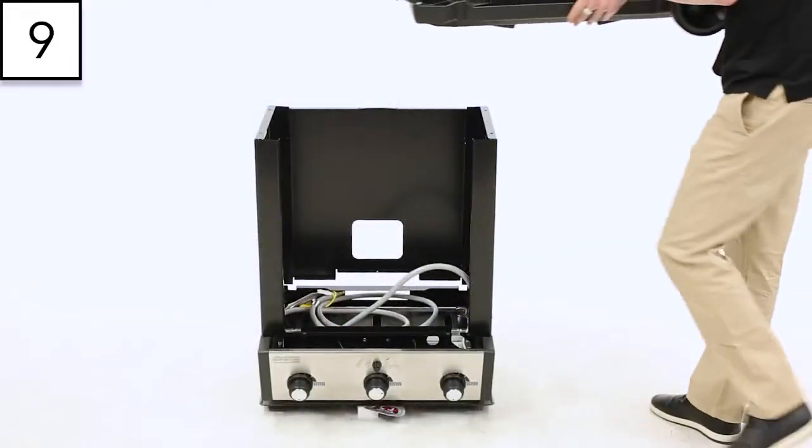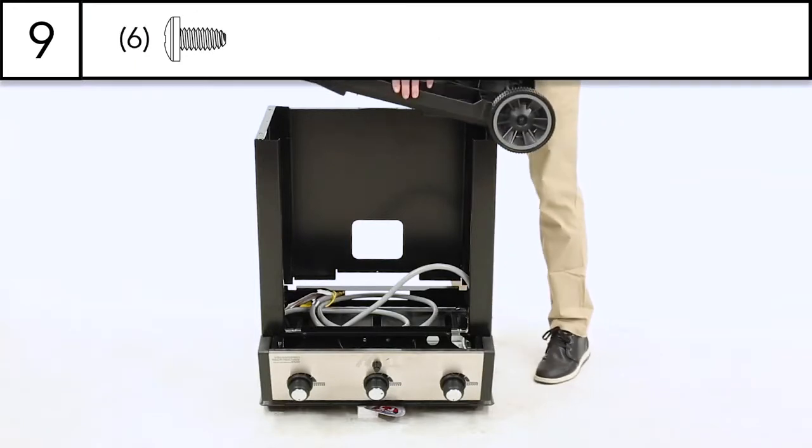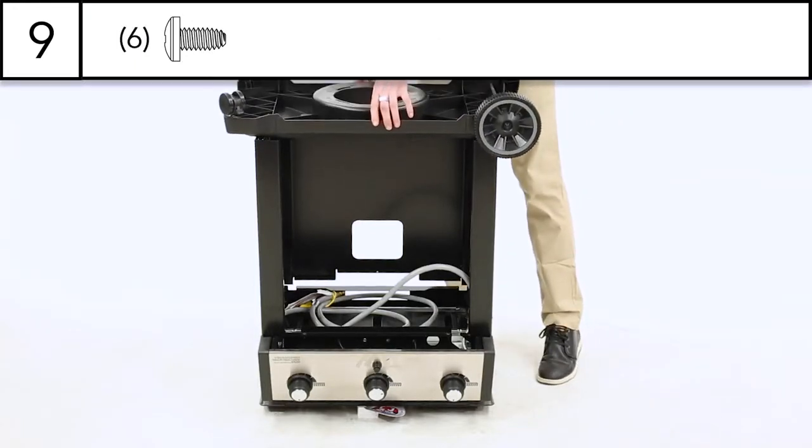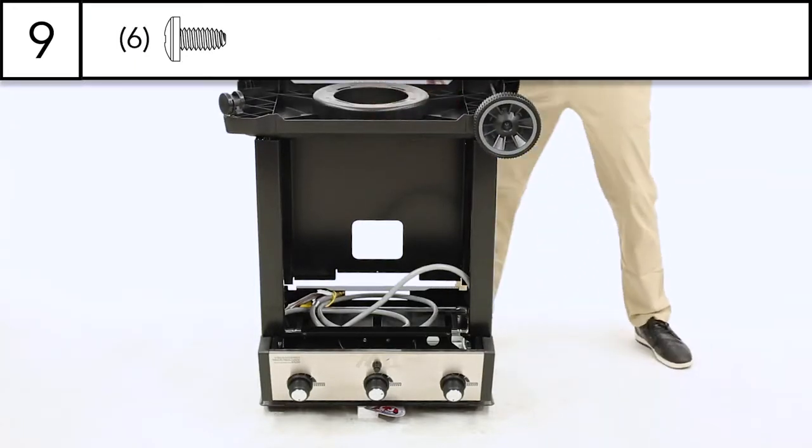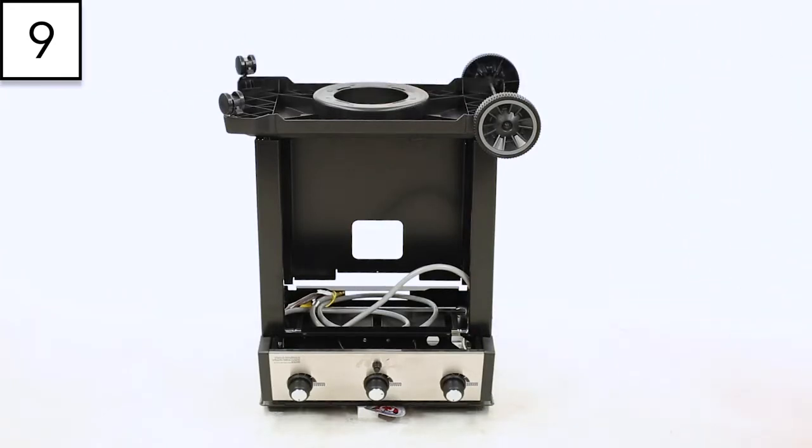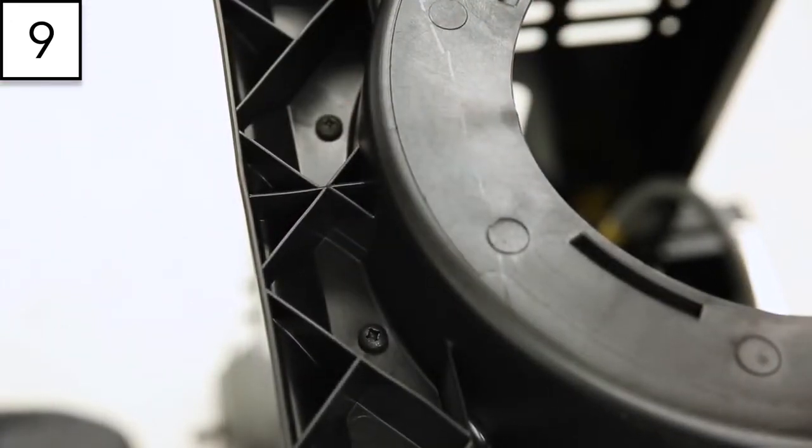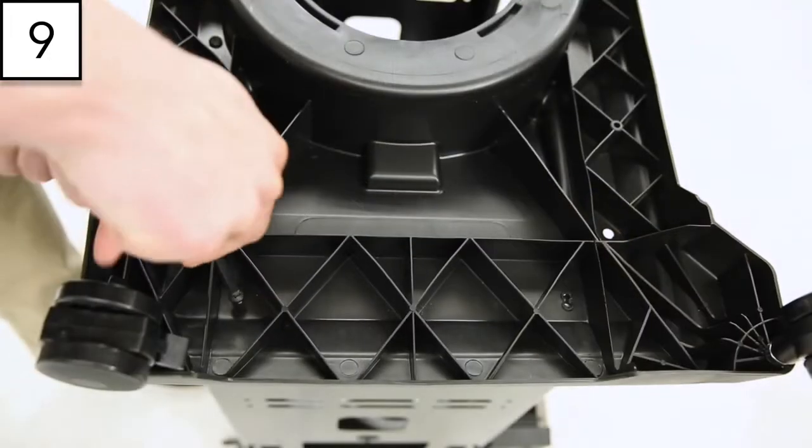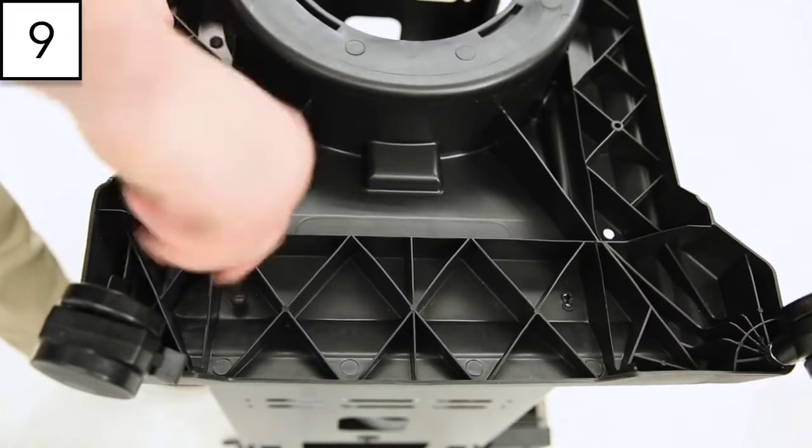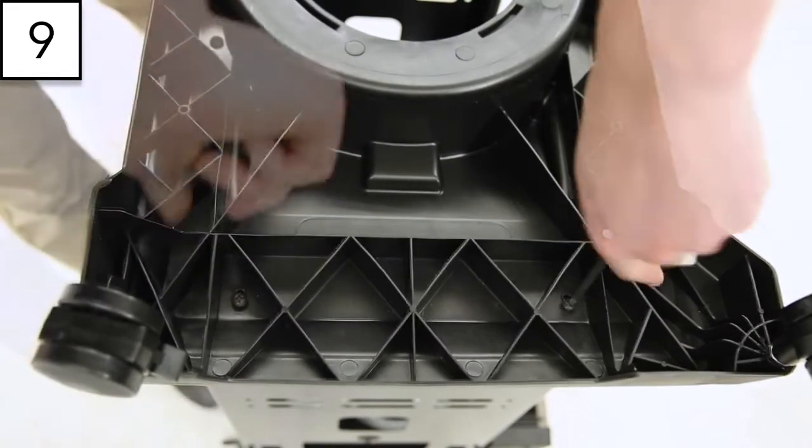Step 9. Using the six screws secure the barbecue base to the bottom of the cabinet assembly. Use the outermost holes on either side of the base when attaching.